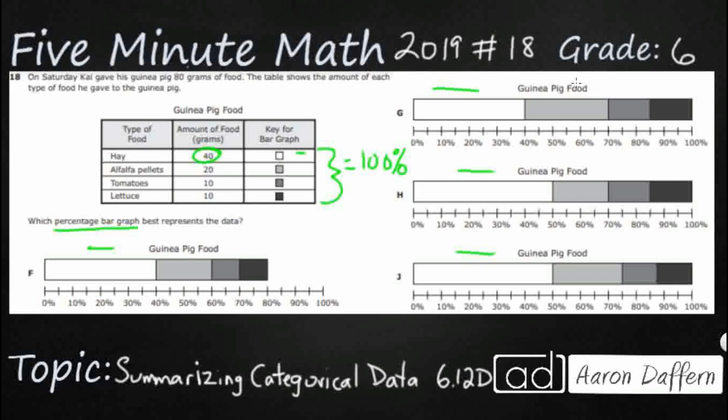The easy thing would be to say oh there's 40 and there's 40 but remember all of this equals 100% so we need to find the total first.